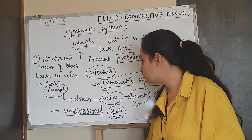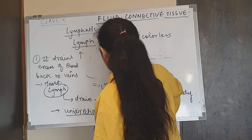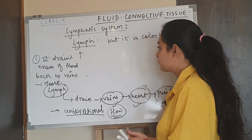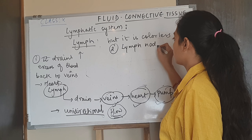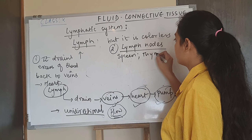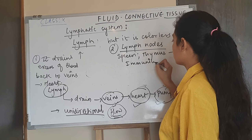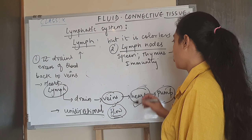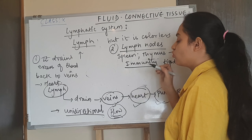Lymph has another function related to lymph nodes. Examples of lymph nodes include the spleen and the thymus. Lymph nodes provide immunity to our body — they produce fighter cells which will fight against any infection.